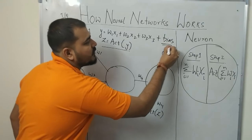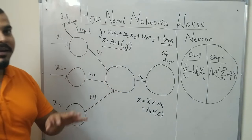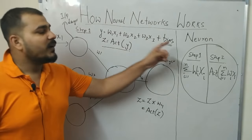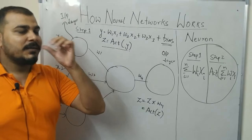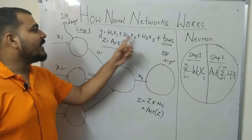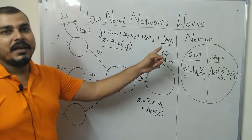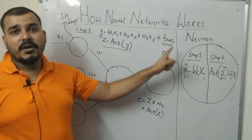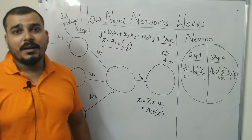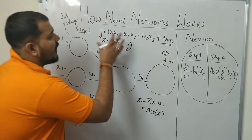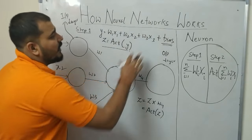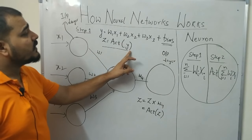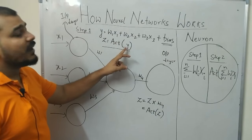After the summation happens, we apply an activation function. But before applying the activation function, we also add a parameter called bias. This bias is some kind of smaller value that gets added to the summation value. We will understand the importance of bias in the upcoming videos.